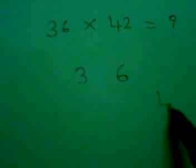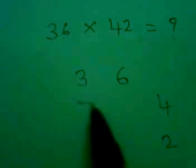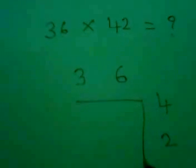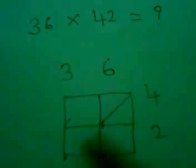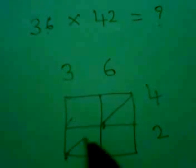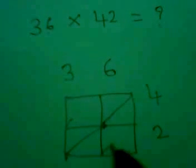First you write down the 36 here and as well as 42 here. Then draw a box with one more four boxes. Just these four boxes draw an inclined line or a cross line in this way.